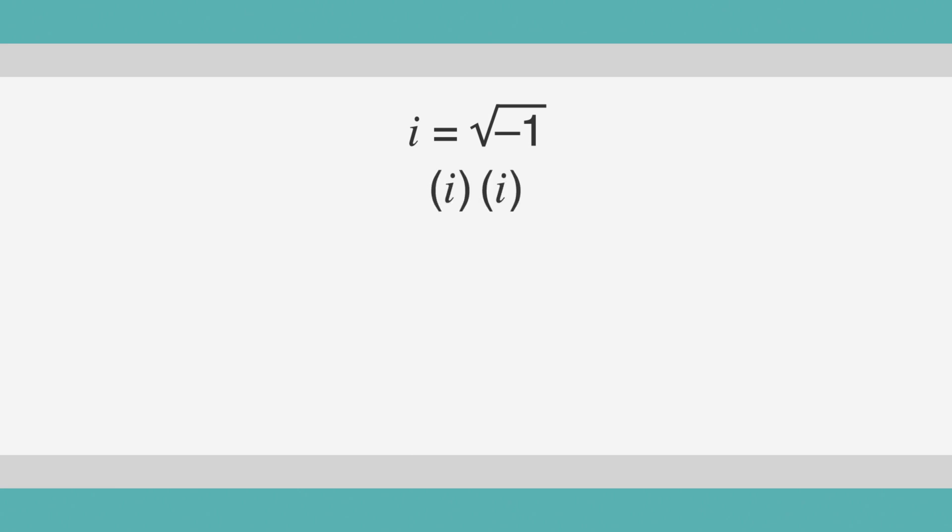If you multiply i times i, you're multiplying the square root of negative 1 times the square root of negative 1. And the square root of negative 1 times the square root of negative 1 is equal to negative 1. So i times i equals negative 1.